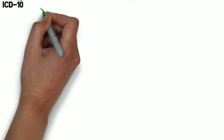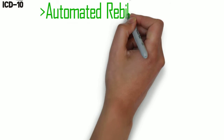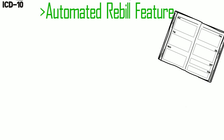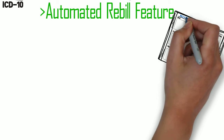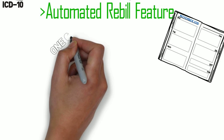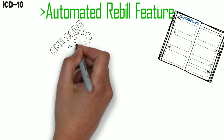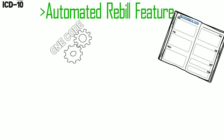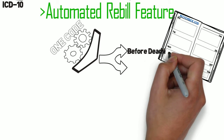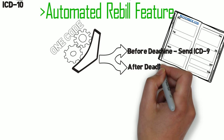Another awesome tool in LIHTC 2015 is the automated rebill feature. When sending rebills after the October 1st deadline, you won't have to manually put ICD-9 codes in. Because LIHTC allows both codes to be stored and at the insurance level indicates when the effective date is, the system will automatically pull the ICD-9 code if the claim was before the effective date.